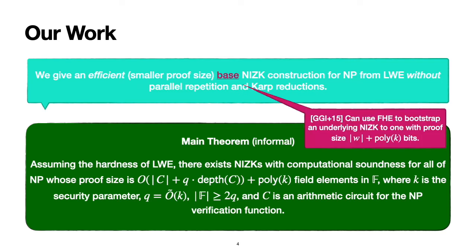Here, what we mean by a base NIZK construction is that the work of GGI+15 shows that we can use fully homomorphic encryption to bootstrap an underlying NIZK protocol to a NIZK protocol whose proof size is just linear in the size of the witness plus poly(k) bits. In particular, we can view our main theorem as providing a more efficient underlying base NIZK from the hardness of LWE.